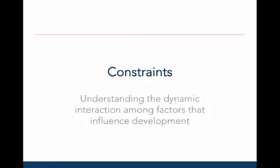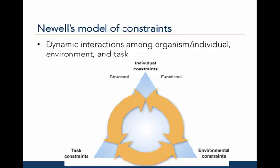Let's begin the next section and discuss the role of constraints. Carl Newell proposed a model of factors or constraints that dynamically interact and result in particular motor behaviors at different times in an individual's life. There are three categories of constraints: organism or individual constraints, environmental constraints, and task constraints.